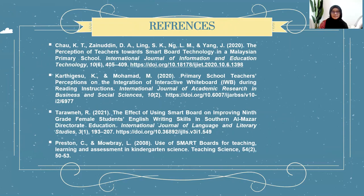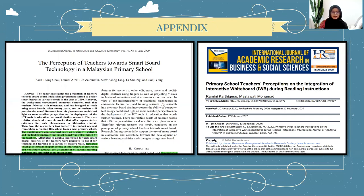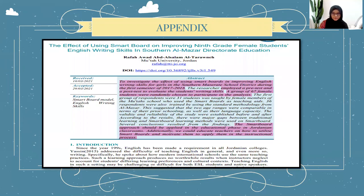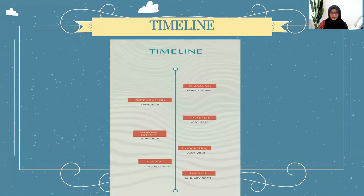These are the references for the articles reviewed, along with the appendix showing the selected articles. The research timeline includes the following phases: planning in February 2021, preparation in April 2021, analysis in May 2021, proposal defense, conducting, review in August 2021, and launch in January 2022.